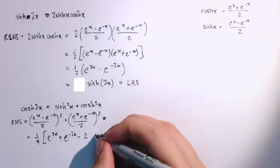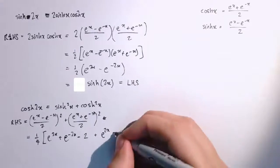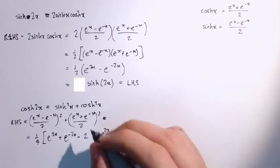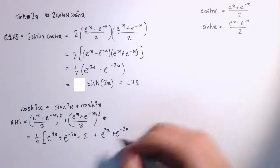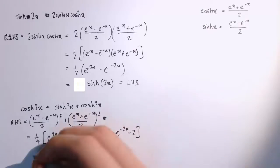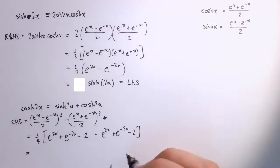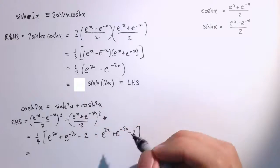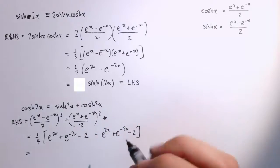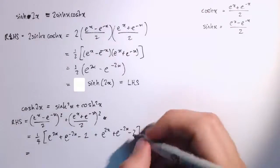And then similarly for this one we get e to the 2x plus e to the minus 2x minus 2, if you multiply that out, and that simplifies down then to, well, I've got a plus 2 here and a minus 2, or here, sorry, I should have a plus 2 here.